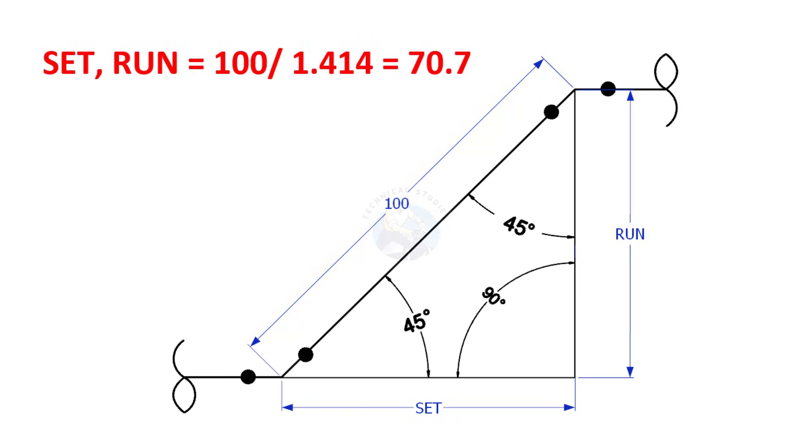Let us calculate. Divide 100 by 1.414. So the set and run length is 70.7.